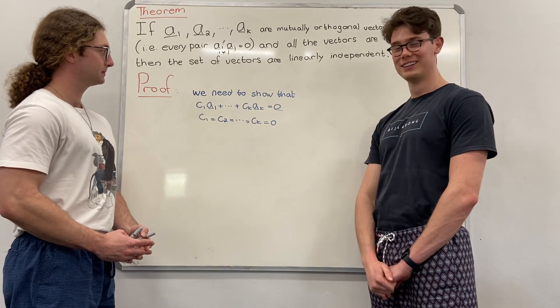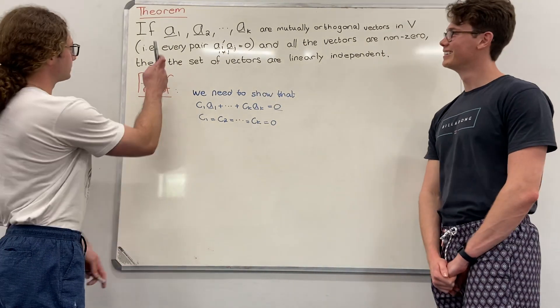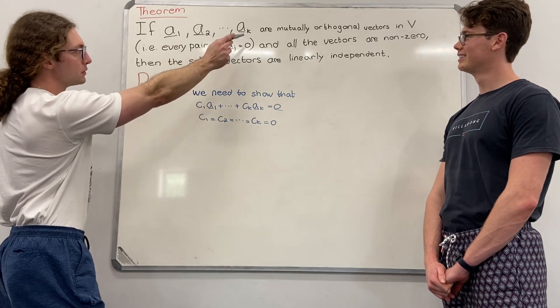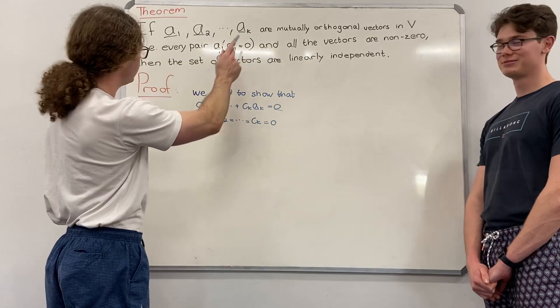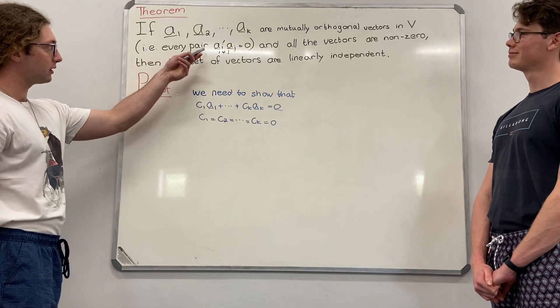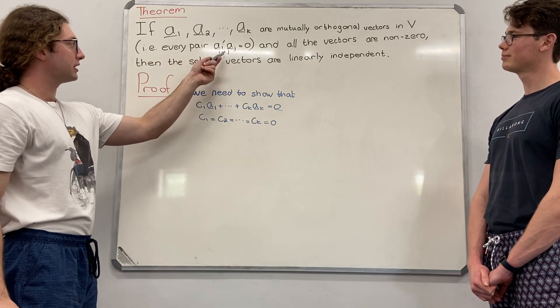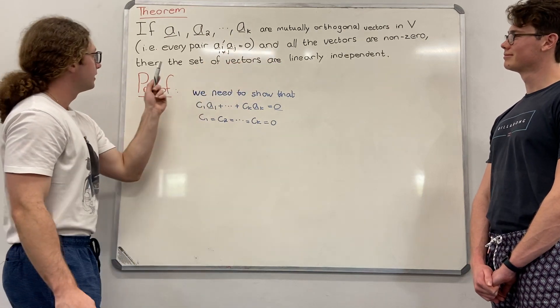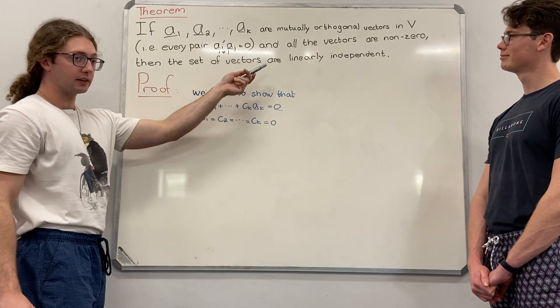Now moving on to the theorem. For this theorem, if the A_i's, the vectors A_i's, are mutually orthogonal vectors in V, i.e. every pair of A_i's where i does not equal j is 0 and all the vectors are non-zero, then the set of vectors are linearly dependent...